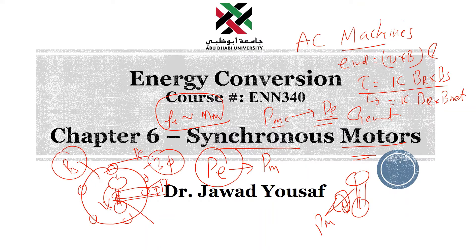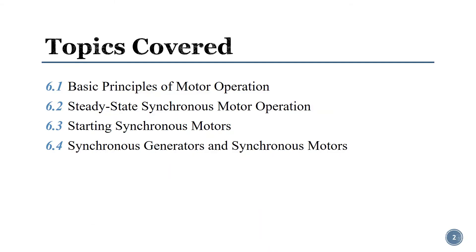When we apply DC power to the field winding of the rotor, there will be a Br. The cross product of Br and the net magnetic field inside the stator induces a torque, and eventually the rotor rotates. That is the concept — the difference between the generator and the motor — and that is the purpose of this chapter. This is essentially a reversal of the generator.